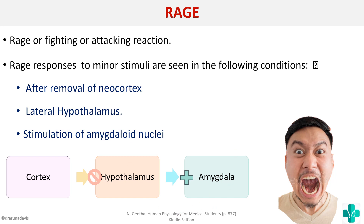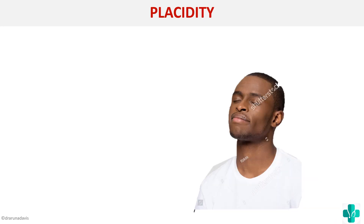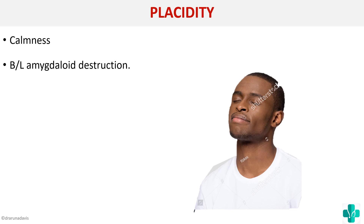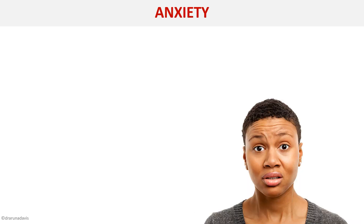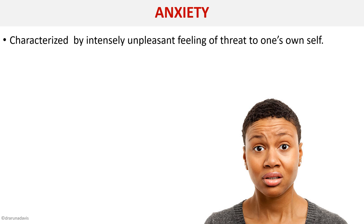Placidity — calmness — occurs with bilateral lesion of the amygdala; the person will not be afraid or angry. Anxiety is characterized by an intensely unpleasant feeling of threat to one's own self, and it is usually seen in lesions of the anterior end of the temporal lobe.